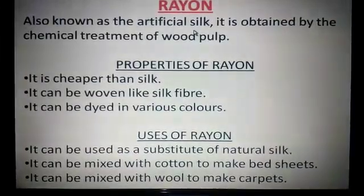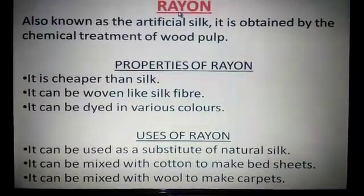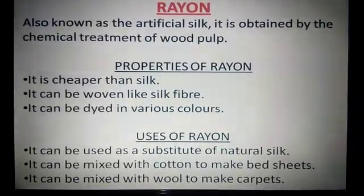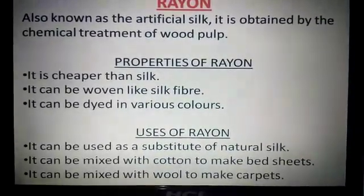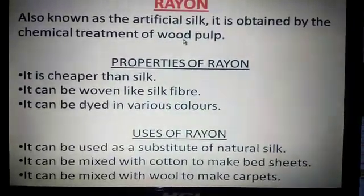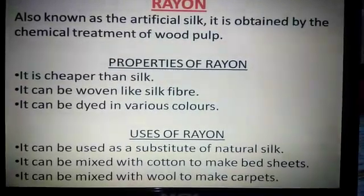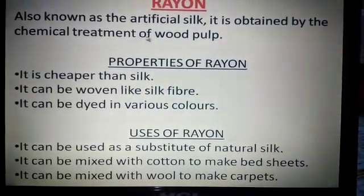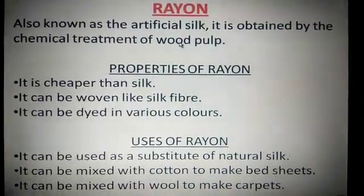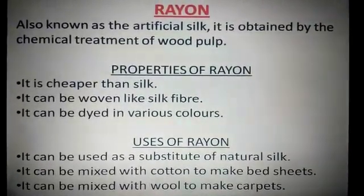In some books, you will find that rayon is also known as semi-synthetic. Why is it known as semi-synthetic? Because one key word here is wood pulp. Wood is a natural product. So if this particular pulp is treated chemically to obtain this artificial silk, it is somewhere written as synthetic fiber and somewhere as semi-synthetic. Don't get confused with that.